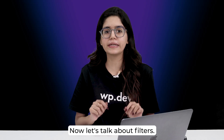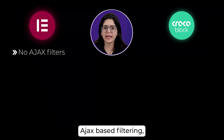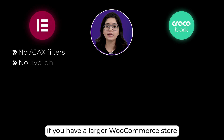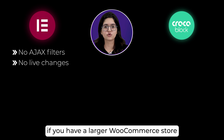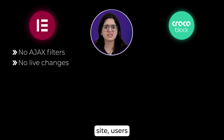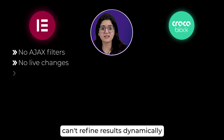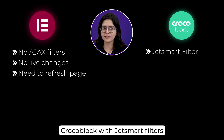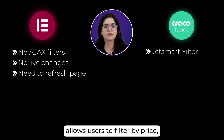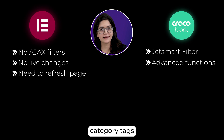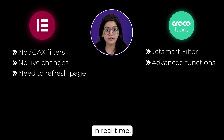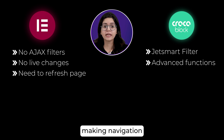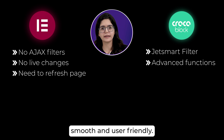Now let's talk about filters. Elementor Pro doesn't offer Ajax-based filtering, meaning if you have a larger WooCommerce store or a directory site, users can't refine results dynamically without refreshing the page. Crocoblock with JetSmart Filters allows users to filter by price, category, tags, or any other custom field in real-time, making navigation smooth and user-friendly.